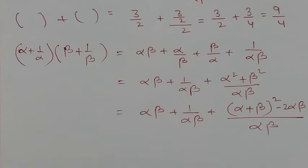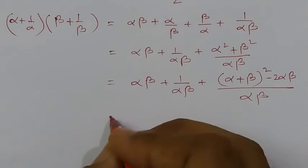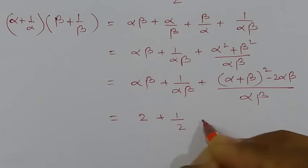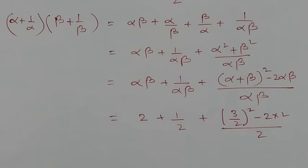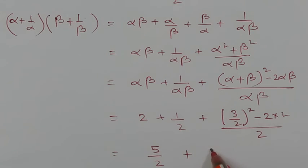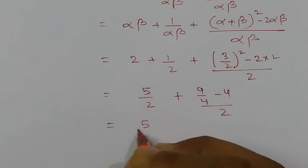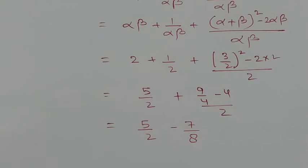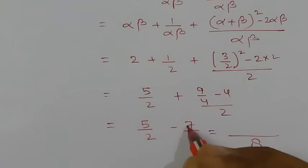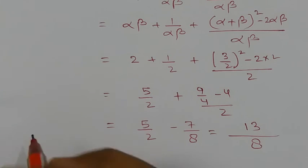Substituting values: alpha·beta = 2, so 1/(alpha·beta) = 1/2. And (alpha + beta)² - 2·alpha·beta = (3/2)² - 2·2 = 9/4 - 4. So (alpha² + beta²)/(alpha·beta) = (9/4 - 4)/2 = (9/4 - 16/4)/2 = (-7/4)/2. Product of roots = 2 + 1/2 + (-7/8) = 20/8 - 7/8 = 13/8.